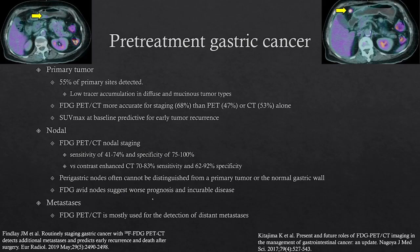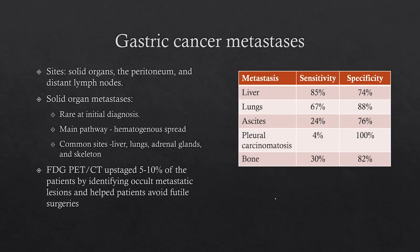FDG-avid nodes do suggest worse prognosis and possibly incurable disease. FDG PET-CT is often used for the detection of distant metastases, typically to solid organs, the peritoneum, and distant lymph nodes. Sensitivity and specificity are 85% and 74% for the liver. Solid organ metastases can be rare at initial diagnosis; the main pathway is hematogenous spread to the liver, lungs, and skeleton. For bone metastases, sensitivity is about 30% but specificity is 82%.